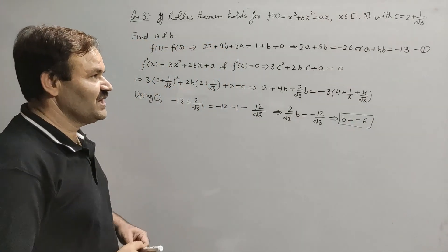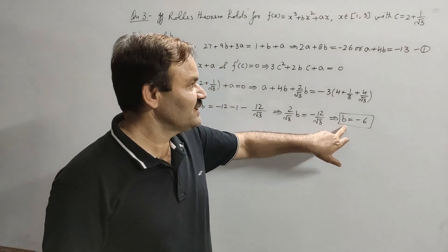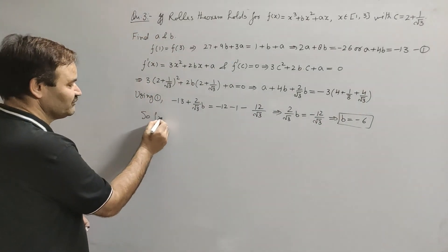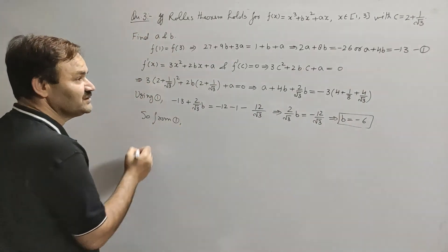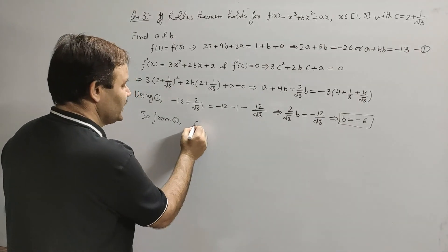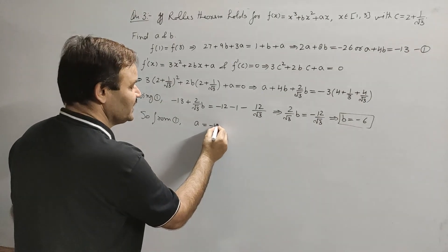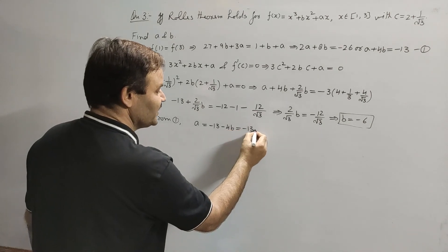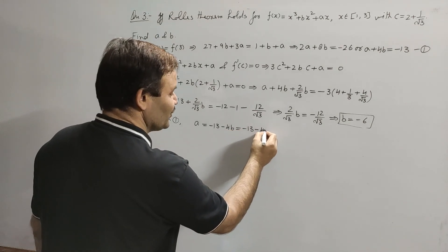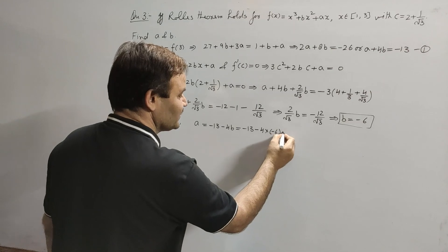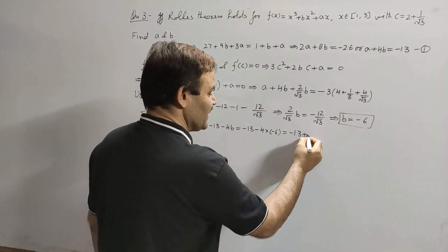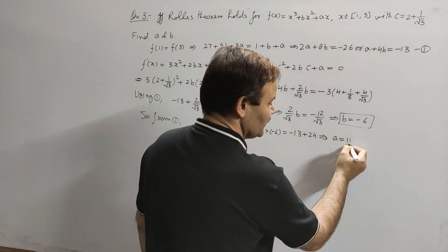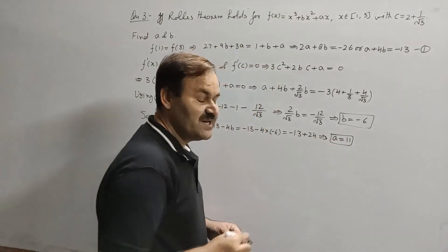Now substituting b = -6 back into equation (1): a = -13 - 4b = -13 - 4(-6) = -13 + 24 = 11. Therefore a = 11 and b = -6. In this way we can find the values of a and b.